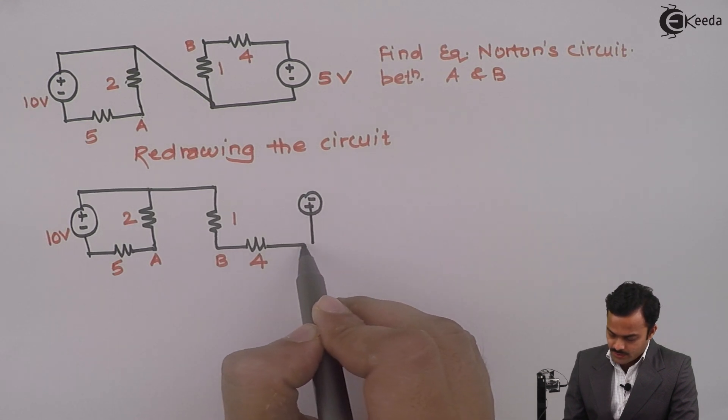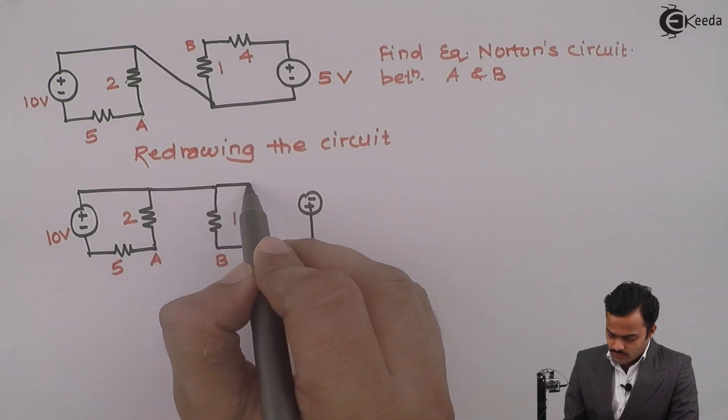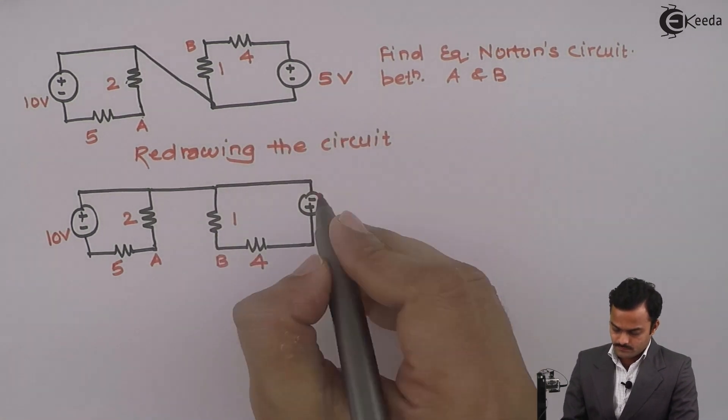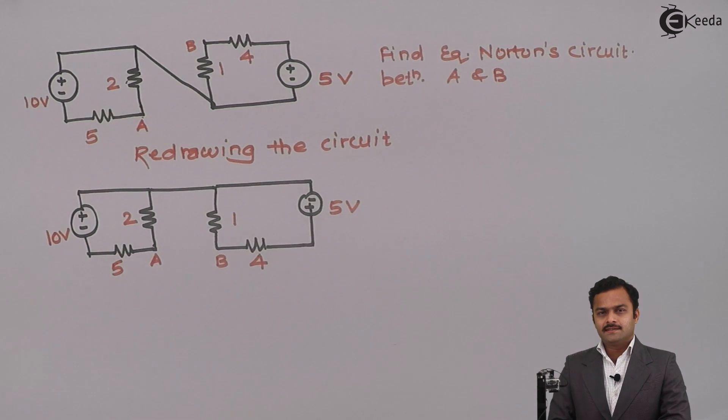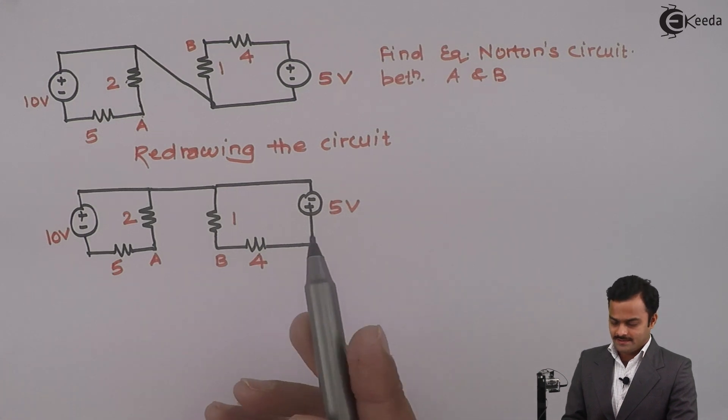Positive is connected to 4 ohms and this negative will go here. Same circuit I have redrawn like this. Why I have done this? Because it is very easy to analyze now.